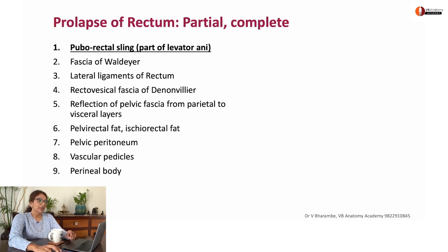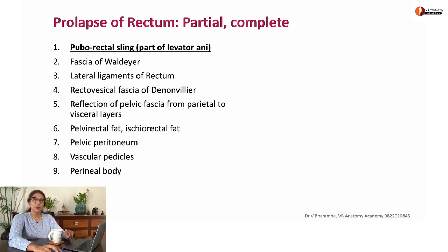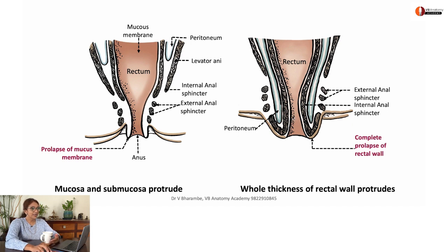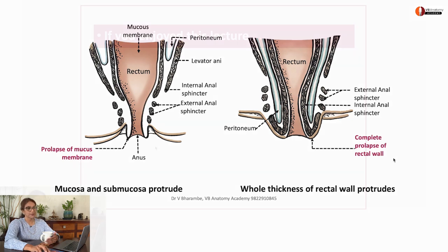But if you lose the puborectal sling — if it is damaged — it will result in partial or complete prolapse of the rectum. Take a look: in one case you can see the mucosa and submucosa protruding out of the anal canal — this is incomplete prolapse. In another case even the muscle is protruding out — this is complete prolapse of the rectum.